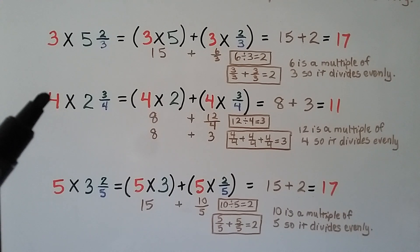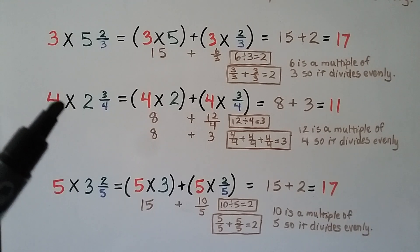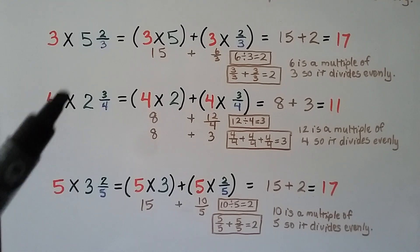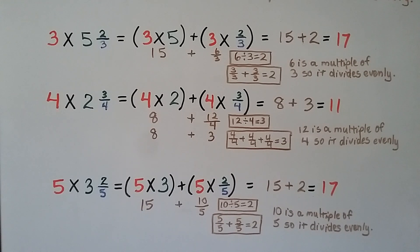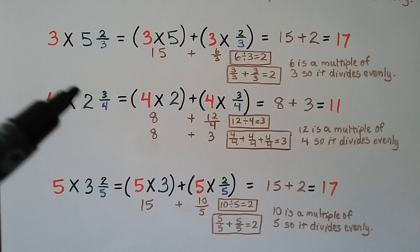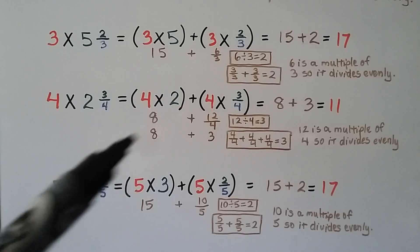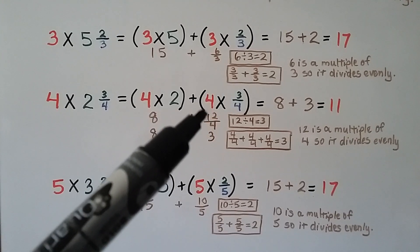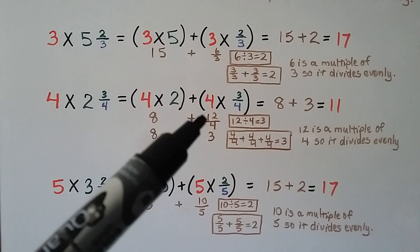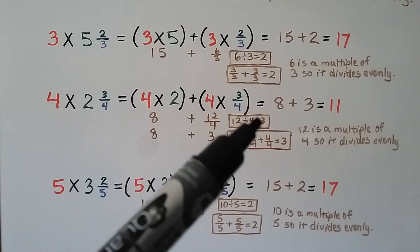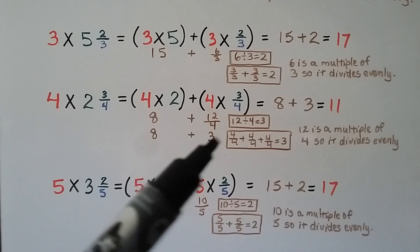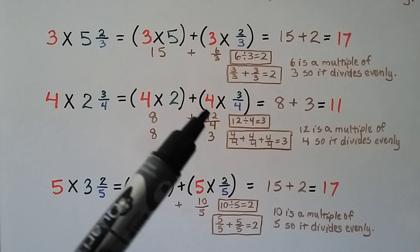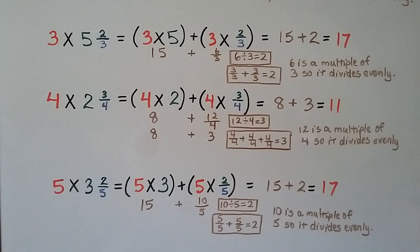Now we have 4 times 2 and 3 fourths. We have a 4 in the whole number and a 4 in the denominator, so we know the product will be a whole number. We do 4 times 2 first, getting 8. Then 4 times 3 fourths: multiply 4 to the 3 numerator to get 12 fourths. To simplify: 12 divided by 4 is 3. So we add 8 plus 3, which is 11 — a whole number. This 12 numerator is a multiple of the 4 denominator, so it divides evenly.